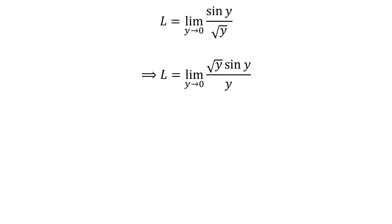Multiplying the numerator and the denominator by a common factor does not change the value of the fraction. So let us multiply the numerator and the denominator by square root of y. This gives us L is equal to limit of square root of y times sine of y upon y as y approaches 0.